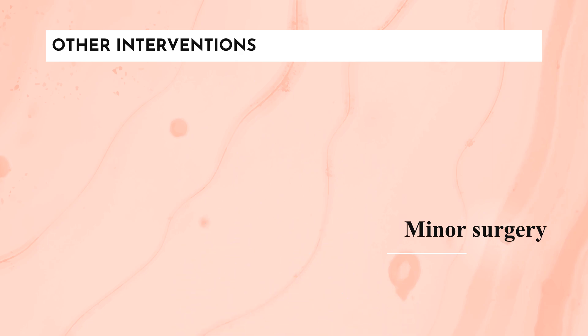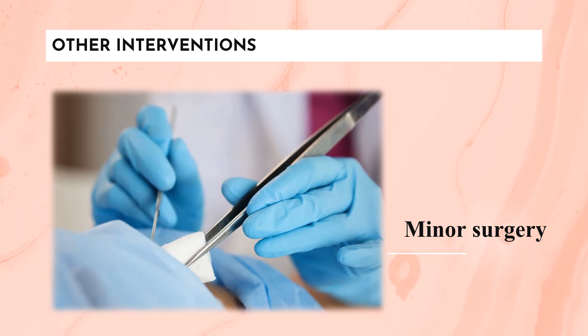Another intervention is minor surgery. If you have a large boil or carbuncle, your doctor may make a small incision to drain the pus. This may relieve pain, speed recovery, and lessen scarring. The doctor may then cover the area with a sterile gauze in case the pus continues to drain.